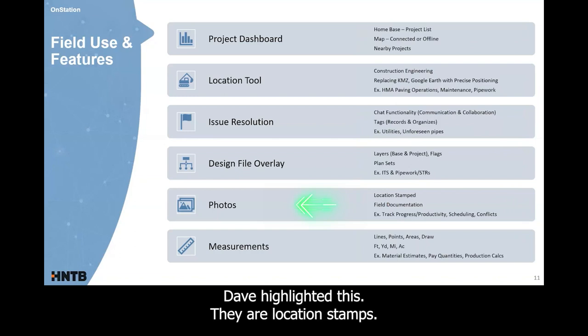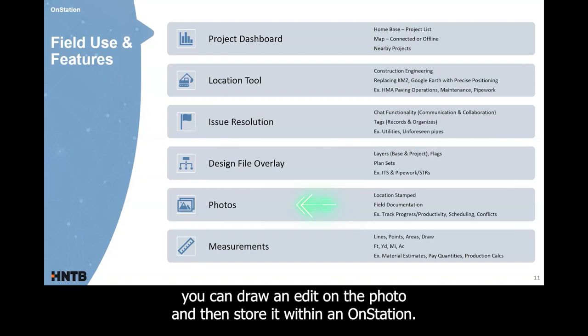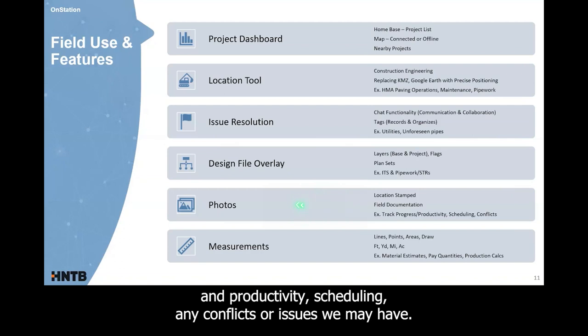Photos is another thing. Dave highlighted this. They are location stamped. They put the little image in the corner of where it's actually located. It's good for field documentation. You can add your own notes. You can draw and edit on the photo and then store it within OnStation. We've used this a lot to track progress and productivity, scheduling, any conflicts or issues we may have.